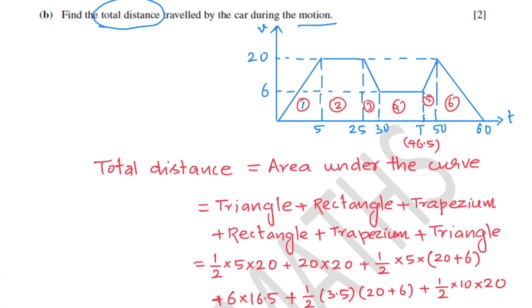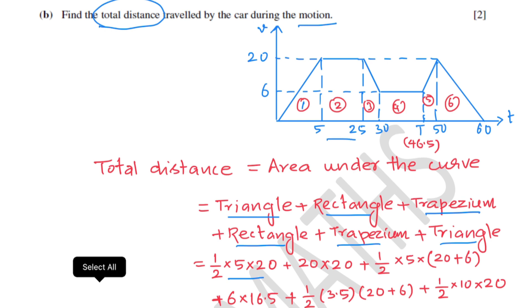Area of the first triangle: half times base times height gives half times 5 times 20. The rectangle spans from 5 to 25 seconds, width 20, height 20, so 20 times 20. Next trapezium from 25 to 30: the distance between parallel lines is 5, and sum of parallel sides is 20 plus 6.